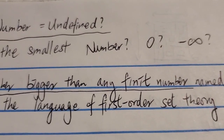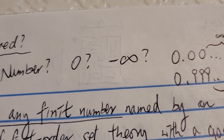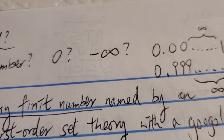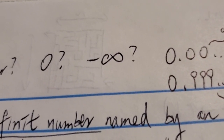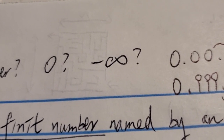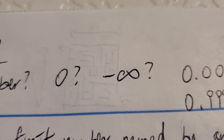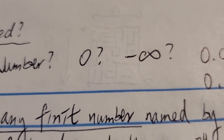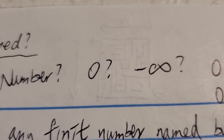Some people might say zero is the smallest number. But if you include negative numbers, some people might say negative infinity — however, we know that infinity is not a number, so negative infinity is not the smallest number. If you include negative numbers, there's no smallest number, just like there's no biggest number, because you can always subtract one.